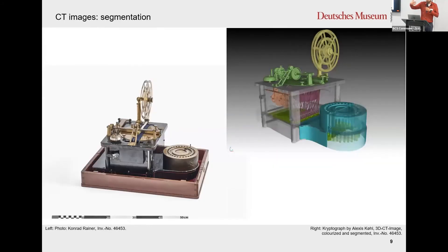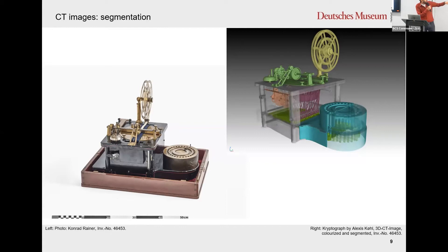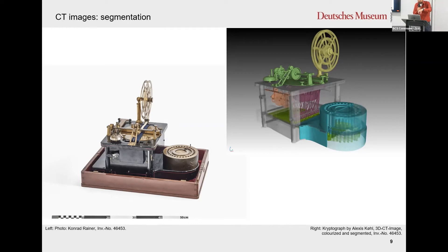Here is another example of segmentation, colorized — one of our oldest cipher devices from the 1890s, completely mechanical. The colorization is obviously done artificially and may look a bit unusual, but as you can see you can clearly define different areas. You can make the case transparent to look inside, and you see six different segmented parts. This is important if you want to show any kind of functionality later on.